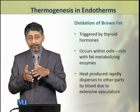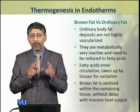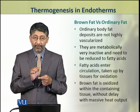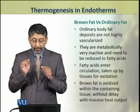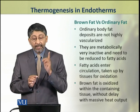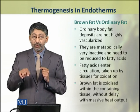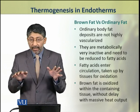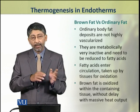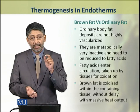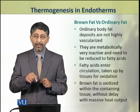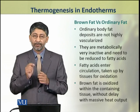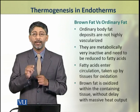Brown fat is different from ordinary body fat because ordinary fat deposits are not highly vascularized and are metabolically very inactive. Ordinary fat needs to be reduced to fatty acids first, and those fatty acids cannot be oxidized within the fat cells themselves — instead, fatty acids enter circulation and are taken up by tissue cells which oxidize them. In contrast, brown fat is oxidized within the containing tissue without delay, with massive heat output. That is why brown fat is more efficient in heat generation and thermogenesis.